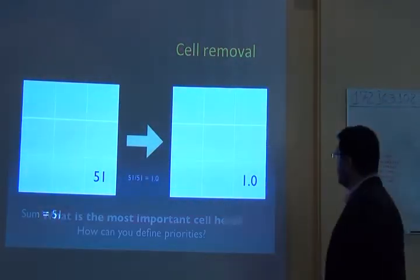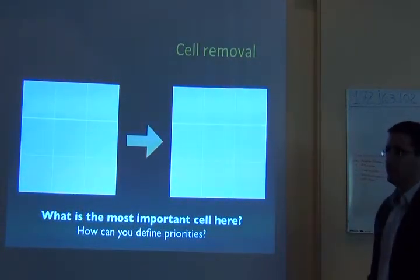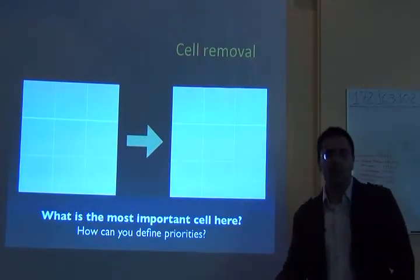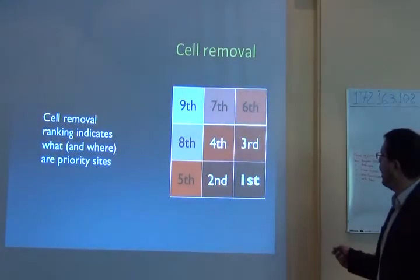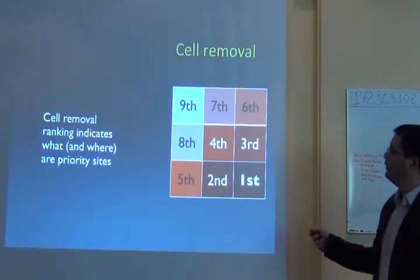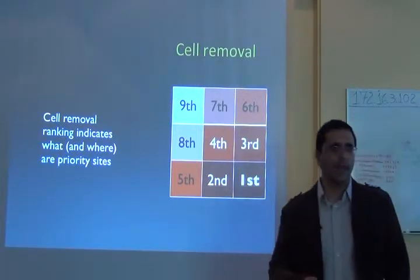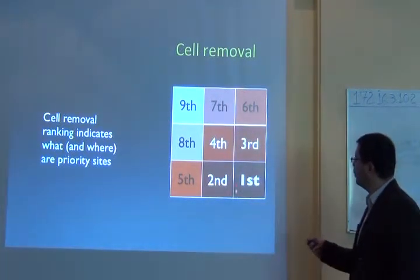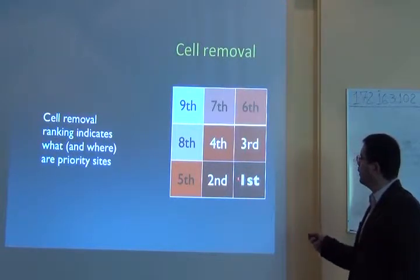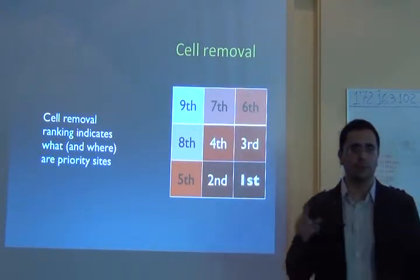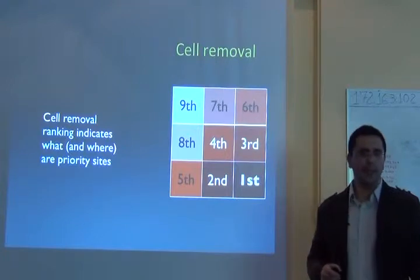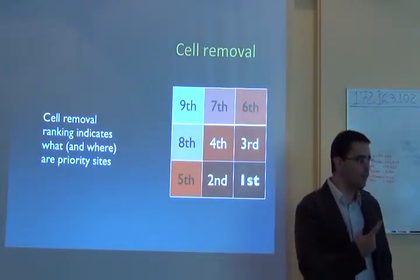After running the algorithm, you can ask: what is the most important cell, or how can I define priority? Once you've run this algorithm, you rank cells so that the last cell removed is the most important and the first is the least important. This gives you a rank of priority for your cells. This is pretty simple to understand, especially if you're thinking about just one species.